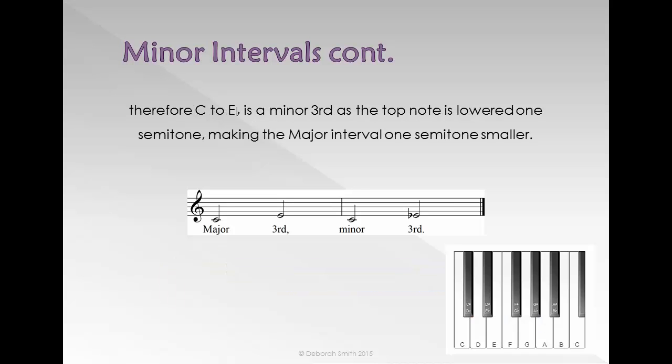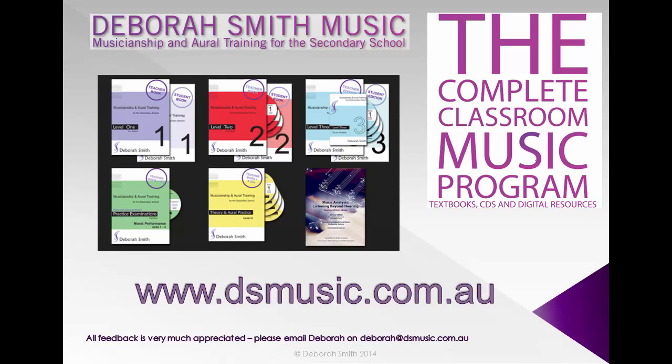Therefore, C up to E flat is a minor third as the top note is lowered one semitone making the major interval one semitone smaller. For more information and resources visit dsmusic.com.au.